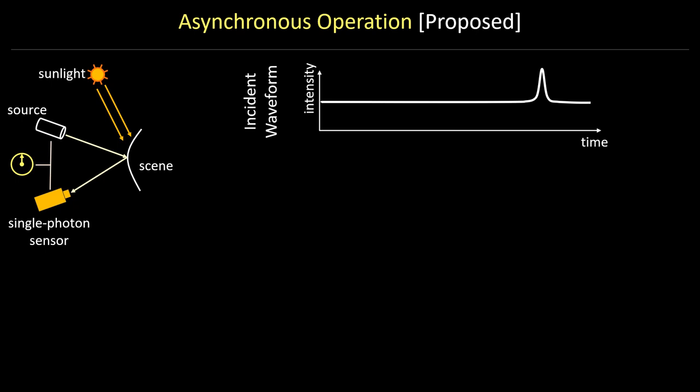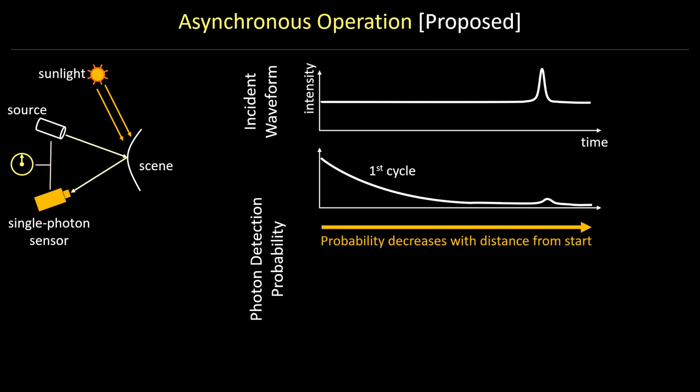We propose a new asynchronous mode of operation that avoids the problem of sunlight distortion. Observe that the probability of detection decays exponentially starting from the time when the sensor is turned on. Conventionally, the sensor is turned on immediately after the laser pulse is transmitted. Therefore, the probability of photon detection at the true peak is very low.